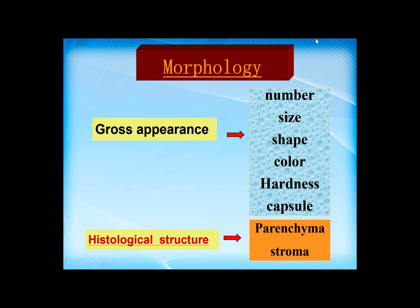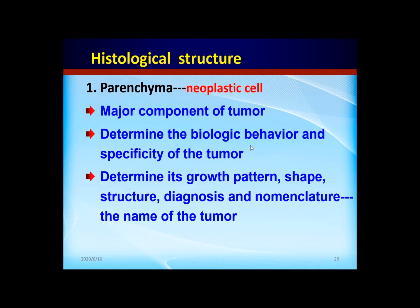So the gross appearance contains: number, size, shape, color, hardness, and capsules. Now let's learn the histologic structure. The tumor tissue contains two components: one is parenchyma, the other is stroma. The parenchyma is made up of neoplastic cells, so parenchyma is the major component of the tumor. It determines the biological behavior and the specificity of the tumor.